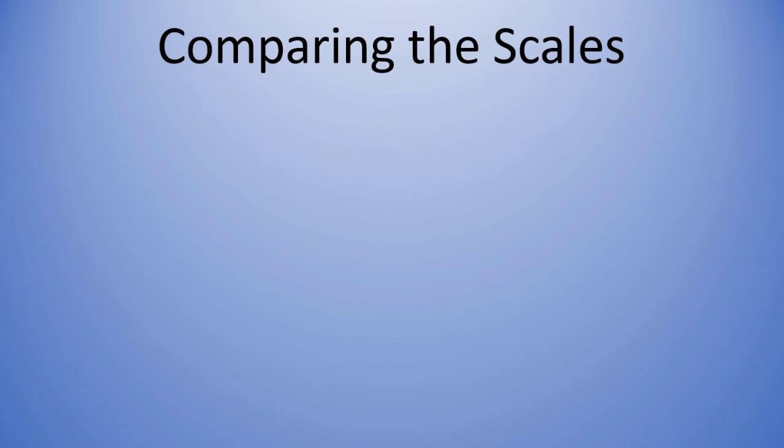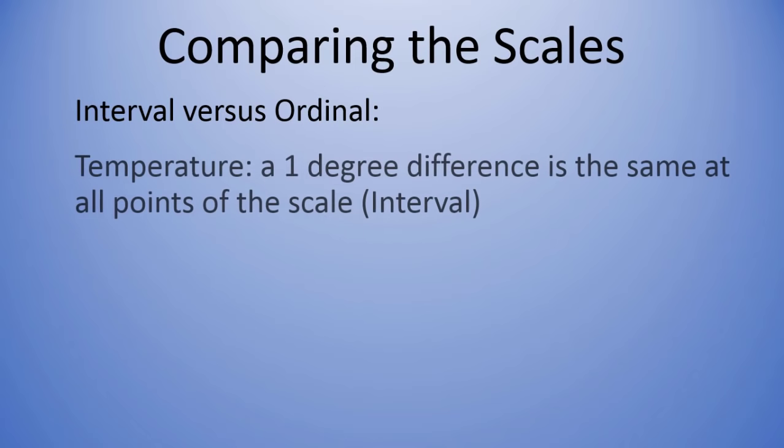Now let's compare the scales, and I think this is where you really can start to see some of the differences between these four scales more clearly as we really start to differentiate between them through examples. Interval versus ordinal—we'll start there. Recall that our interval example was temperature.